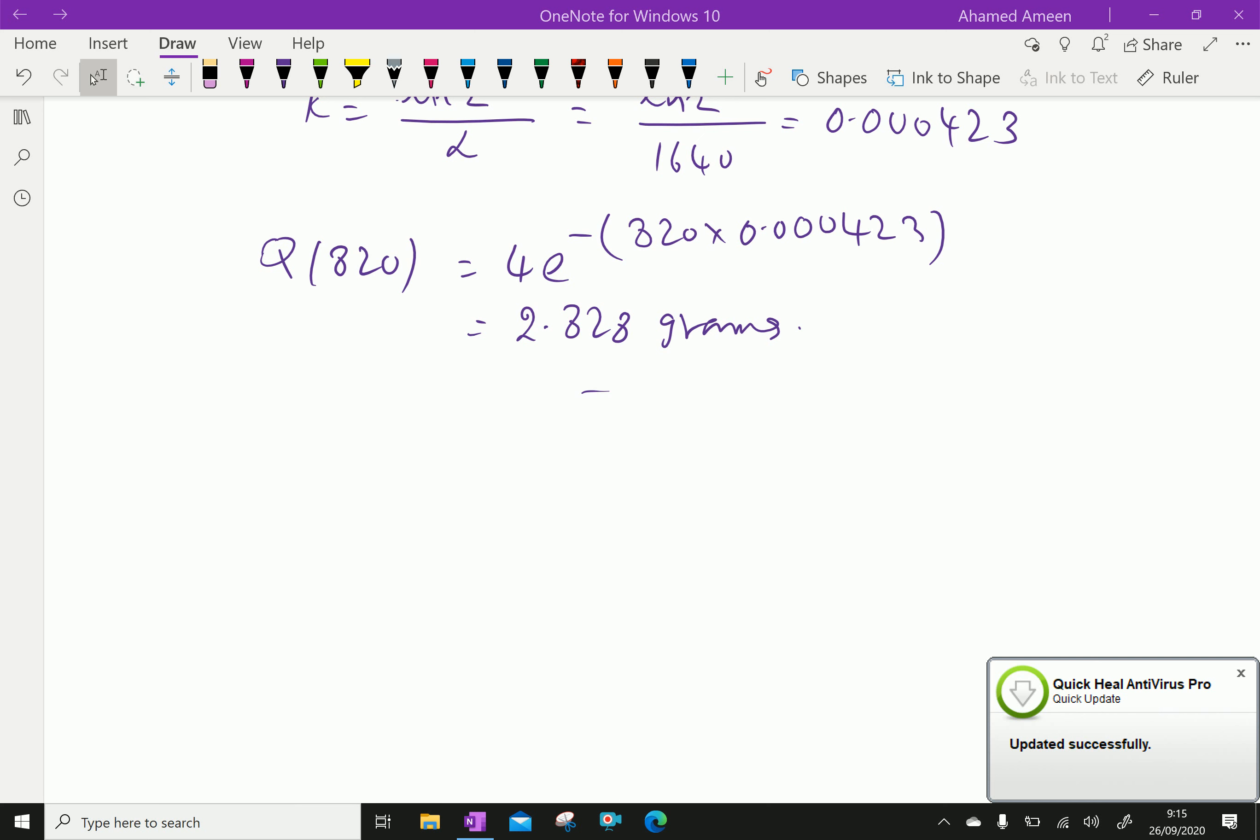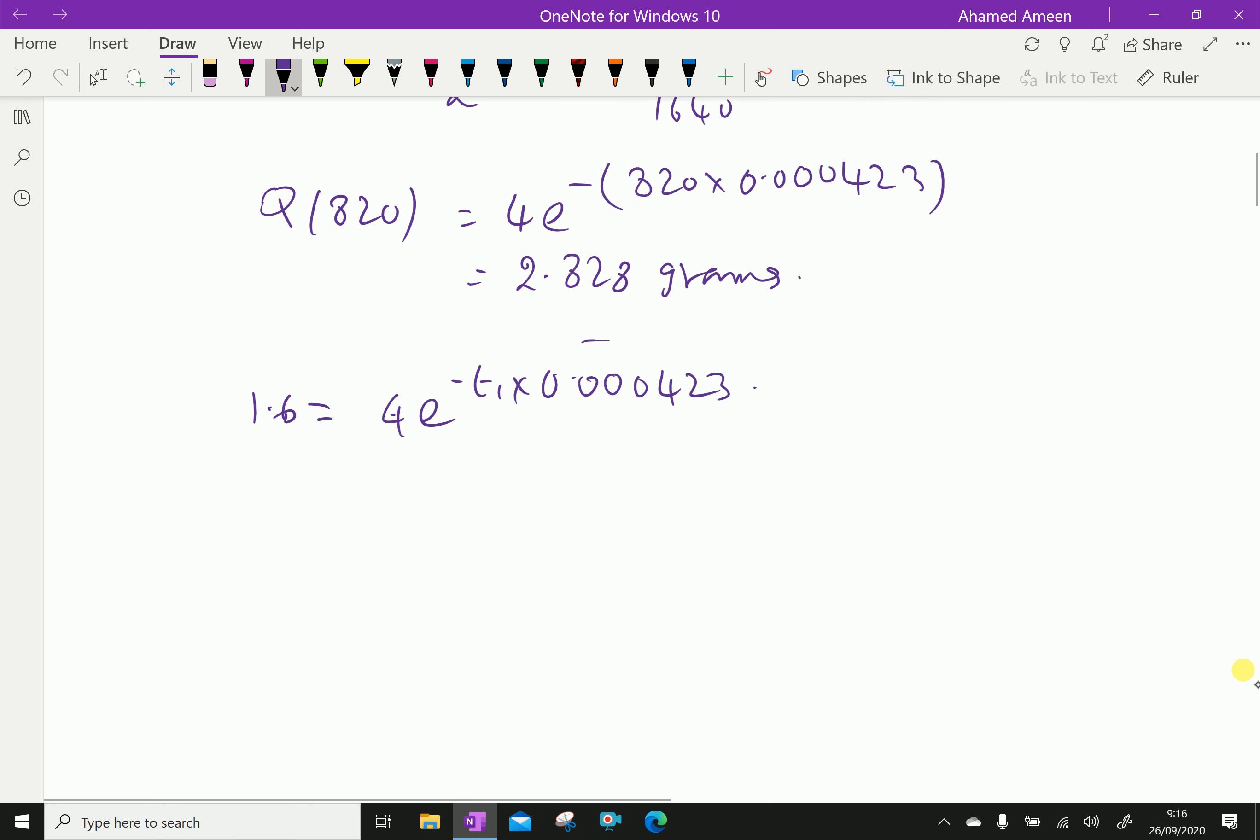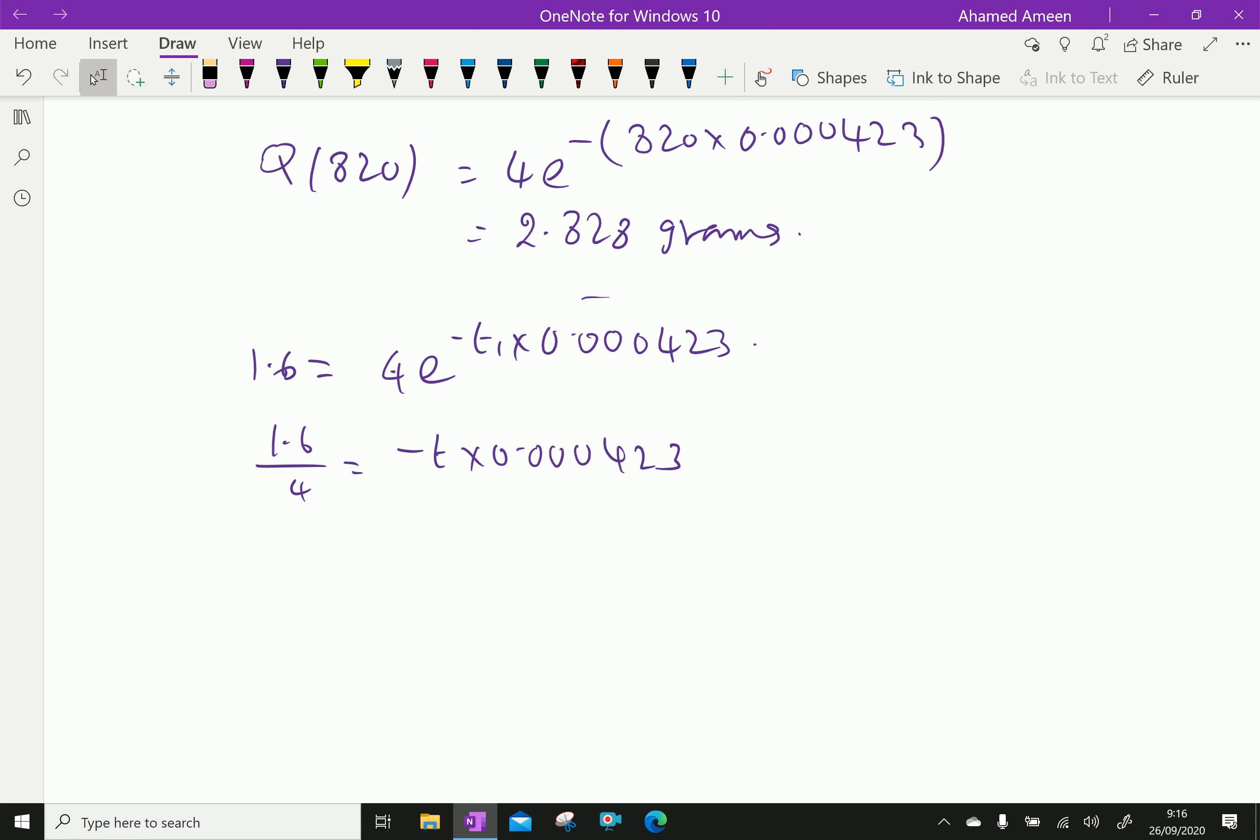Here, 1.6 equals 4 times e to the power minus t times 0.000423. Then 1.6 over 4 equals e to the power minus t times 0.000423. Taking the natural log: ln of 1.6 over 4 equals minus t times 0.000423.